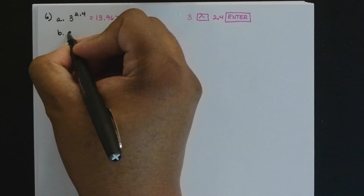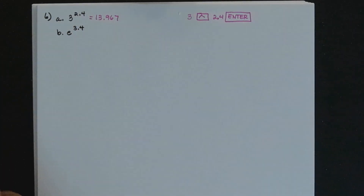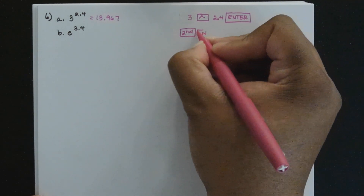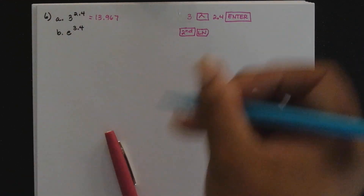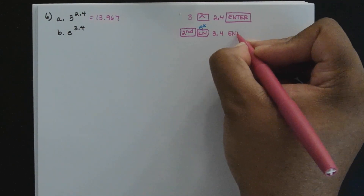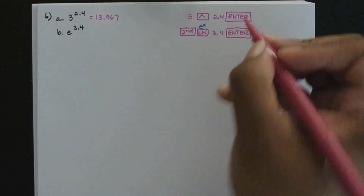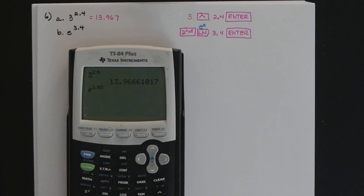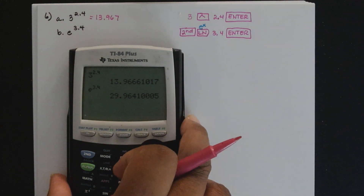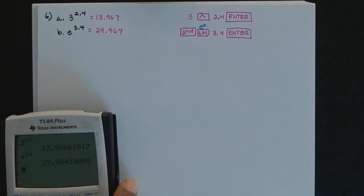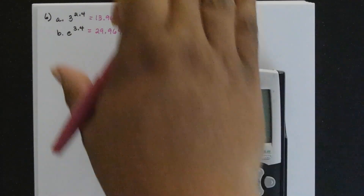For part B, we have e to the 3.4. For E, press second and LN because above the LN key is e to the x. Then type 3.4 and press enter. To three decimal places, e to the 3.4 is 29.964.